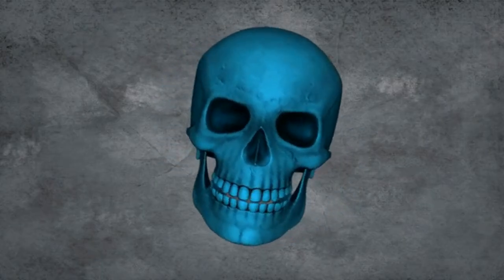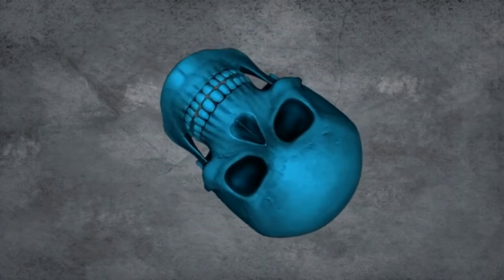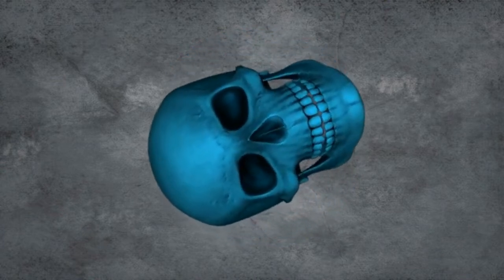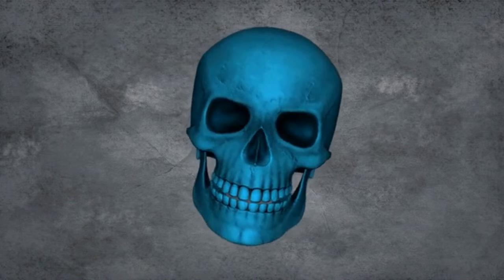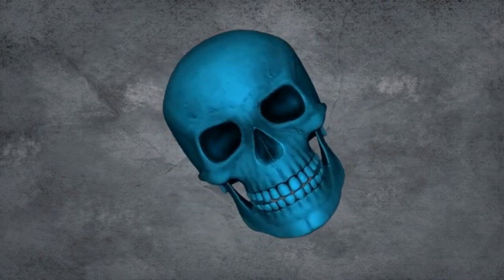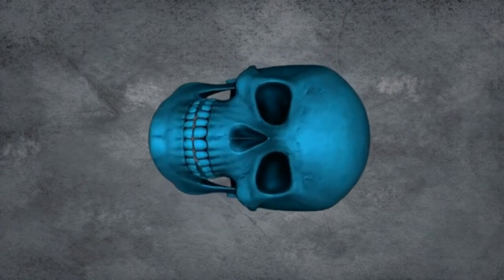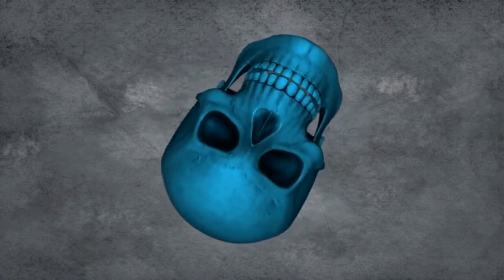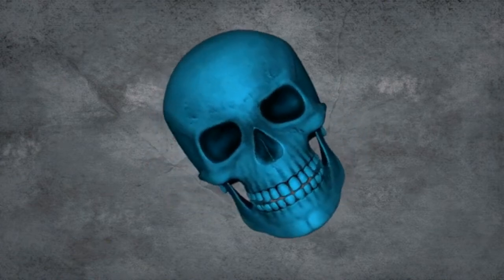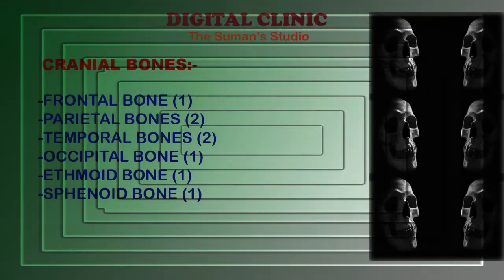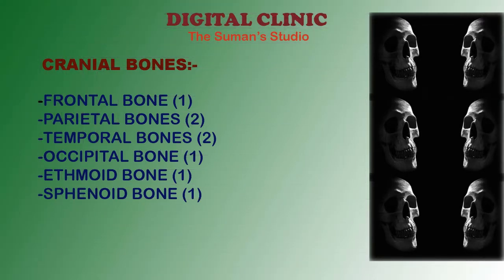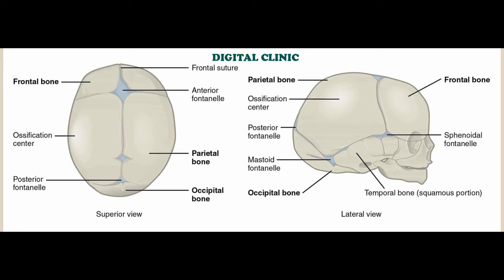The skull consists of 29 bones and is divided into three parts. The upper part of the skull is called the cranium, which includes eight bones. The lower part of the skull is called the face, consisting of 14 facial bones. And there are seven bones associated with the skull. Cranium includes eight bones: one frontal bone, two parietal bones, two temporal bones, one occipital bone, one ethmoid bone, and one sphenoid bone.